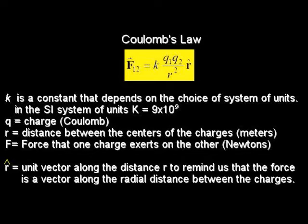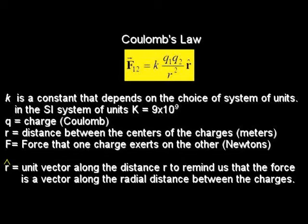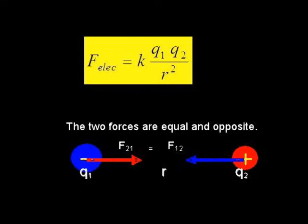In the SI system of units, k is equal to 9 times 10 to the 9th newton meter squared over coulomb squared. q1 and q2 represent two charges. r is the distance between the centers of the charges. The r with the roof on top represents a unit vector along the distance.